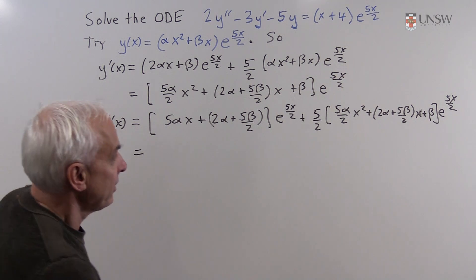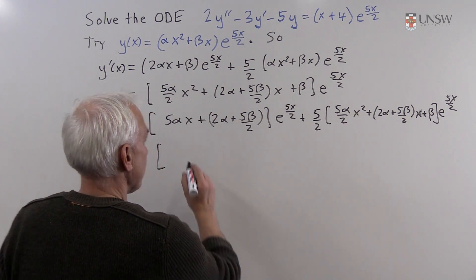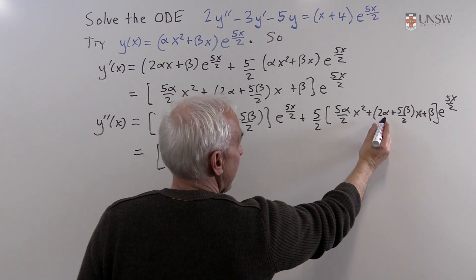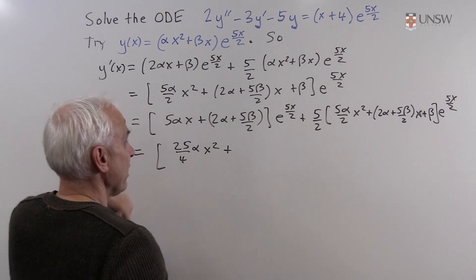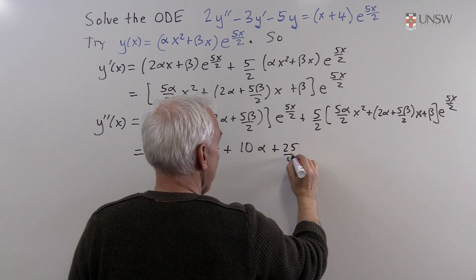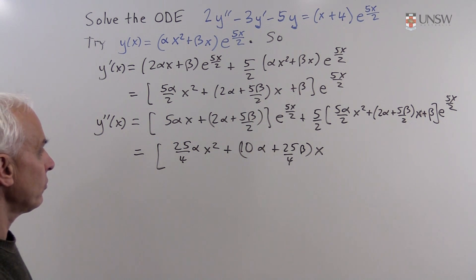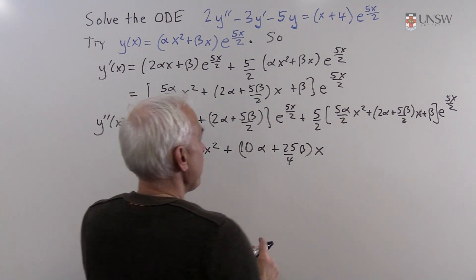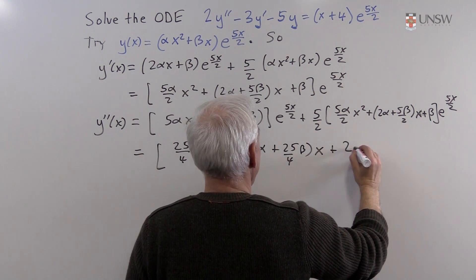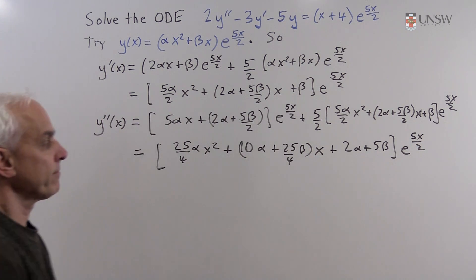Collecting terms in y'': the x² coefficient is 25α/4; the x coefficient is 5α + 5α + (5/2)·(5β/2) giving 10α + 25β/4; and the constant term is 2α + 5β/2 + 5β/2 = 2α + 5β. So y''(x) = [(25α/4)x² + (10α + 25β/4)x + (2α + 5β)]·e^(5x/2).